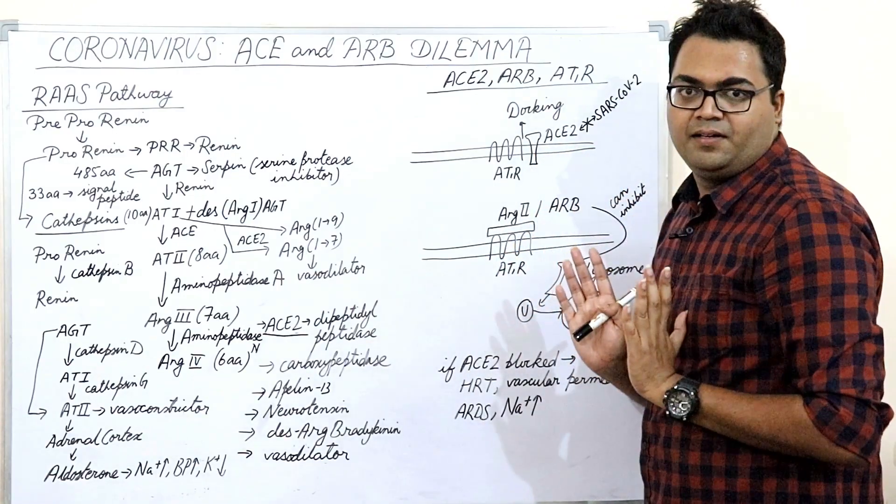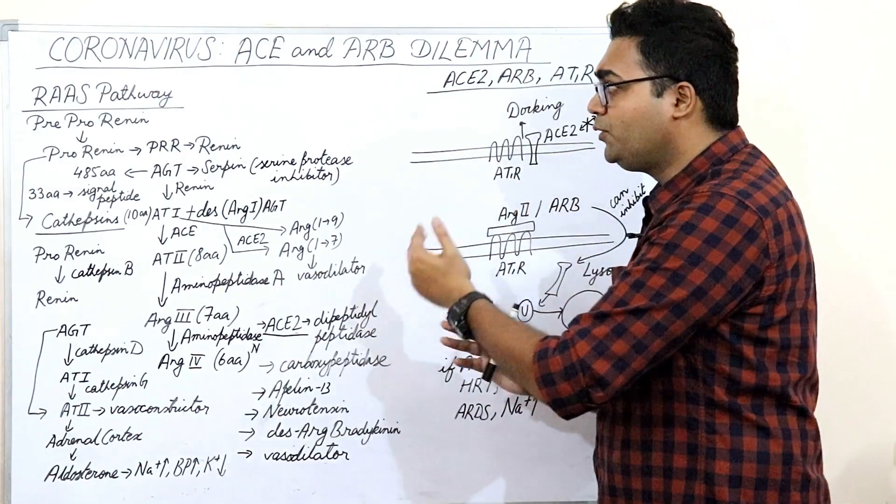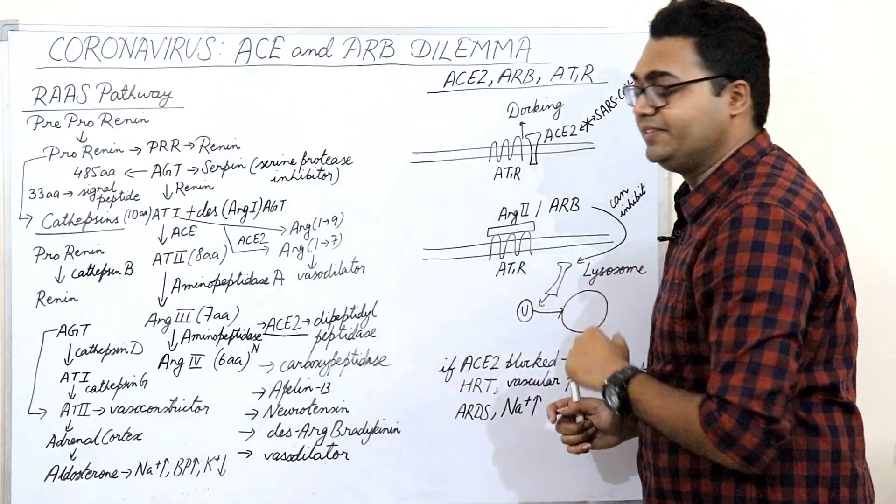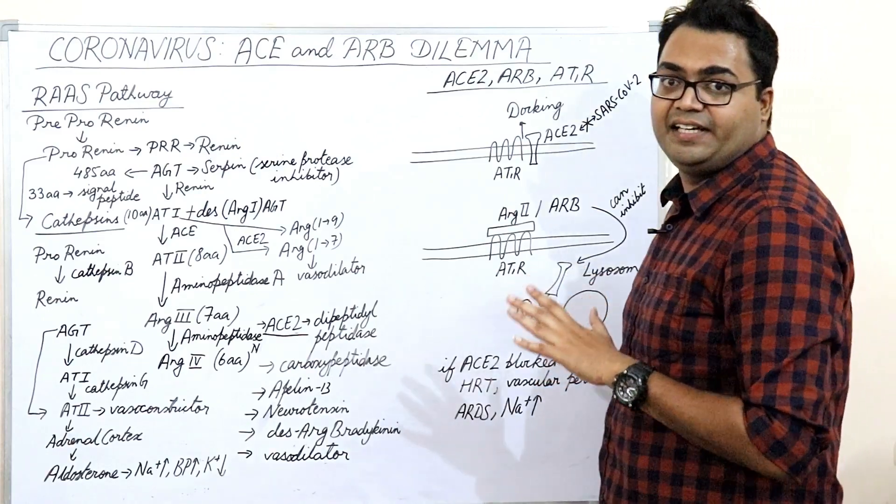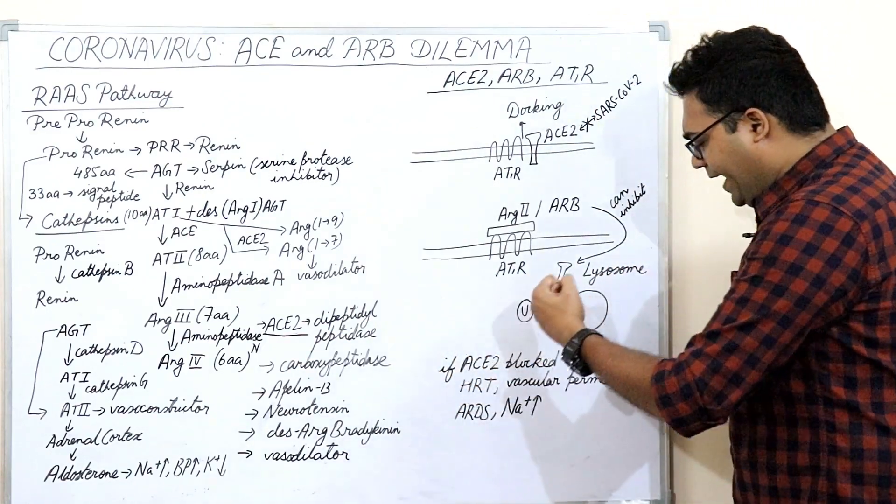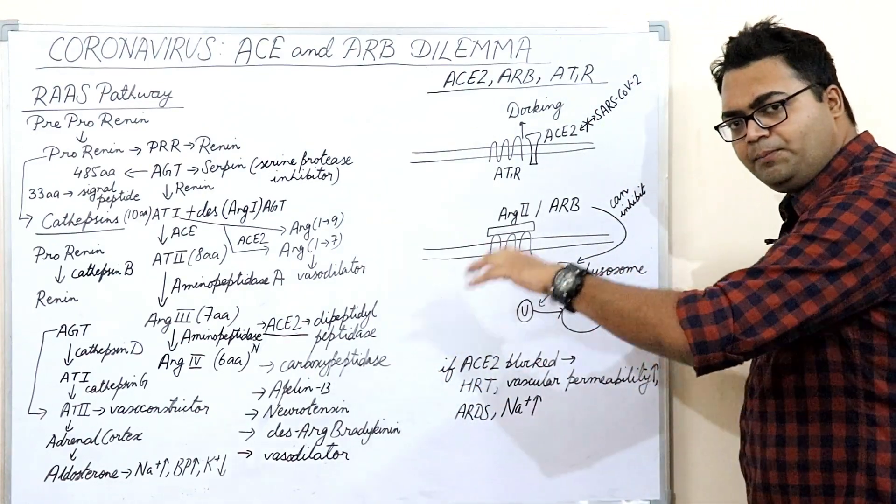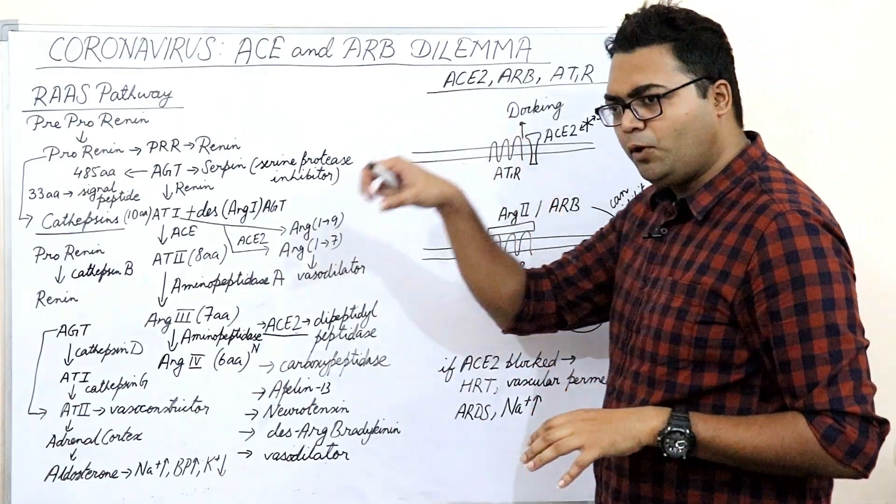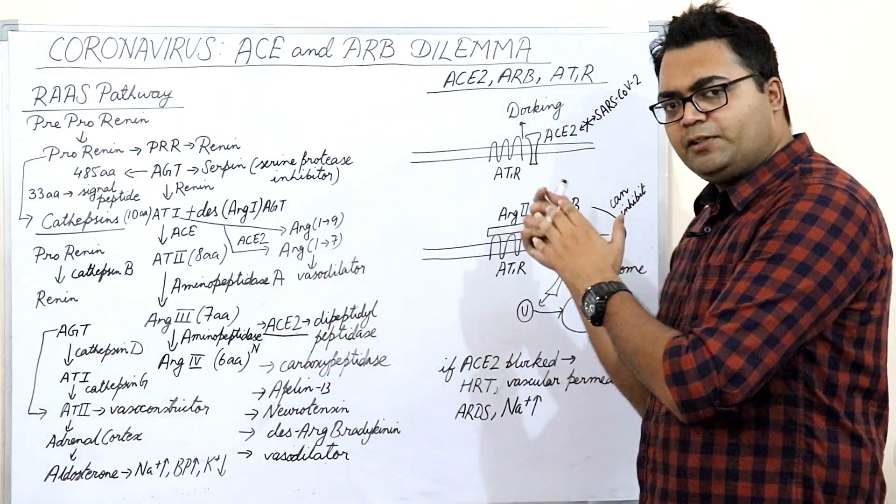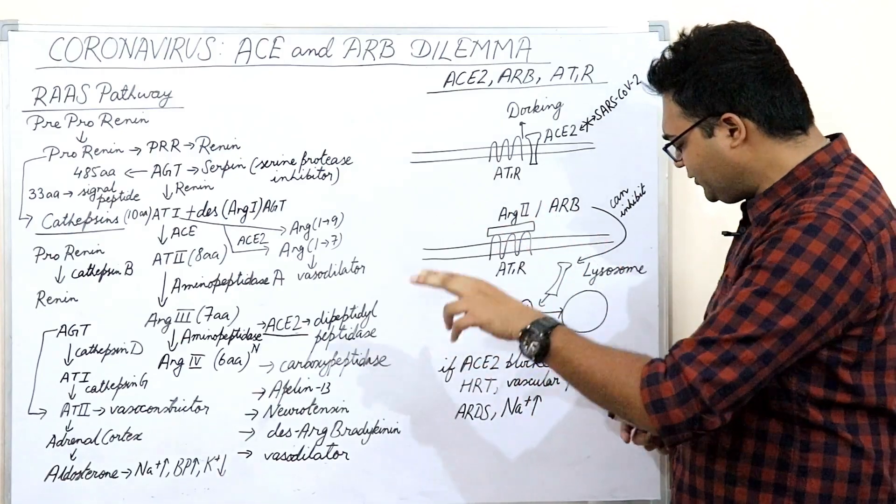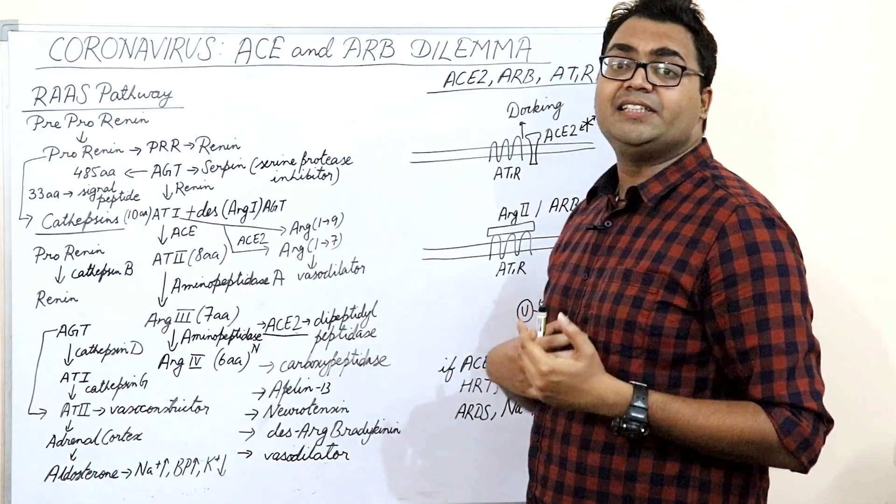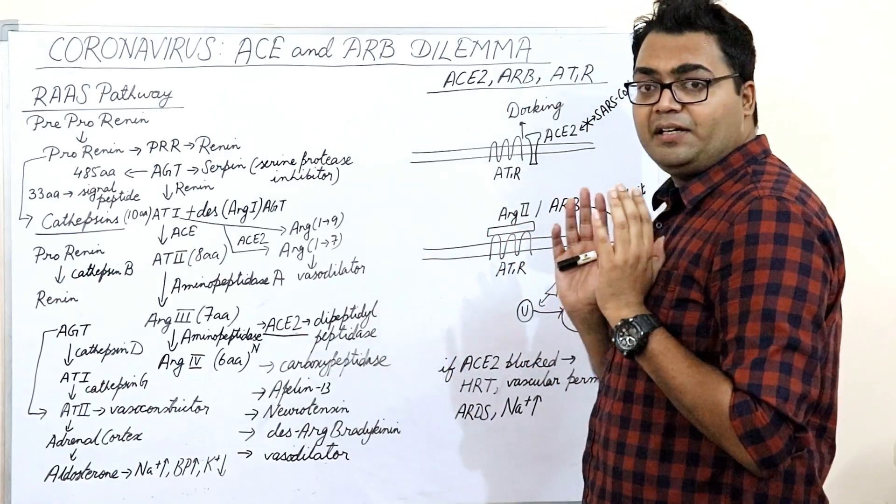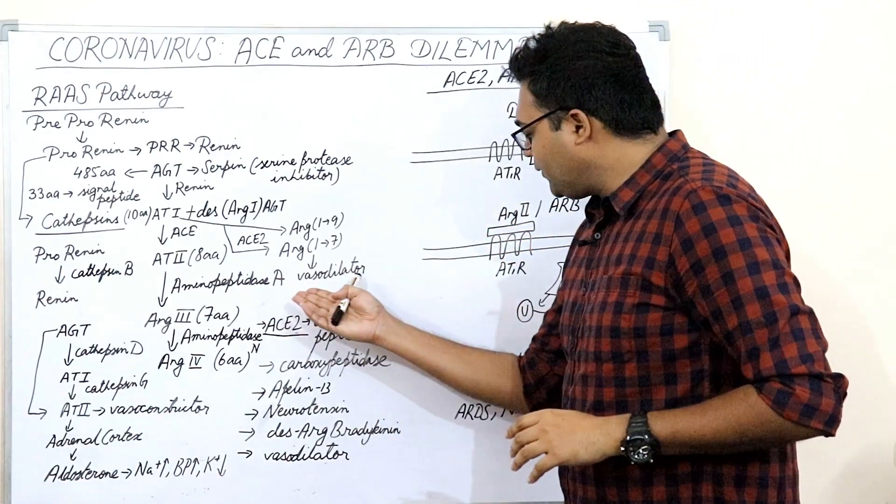So, kindly do not pay heed to that Lancet hypothesis. And follow the guidelines of the American Heart Association, AHA. If ACE2 is blocked, if some drug is produced, if you directly block ACE2, can you protect yourself against SARS-CoV-2? Yes, but if ACE2 is blocked, then you will be more prone to hypertension. And if you are hypertensive, then you can call it an endgame. Because it is a vasodilator.